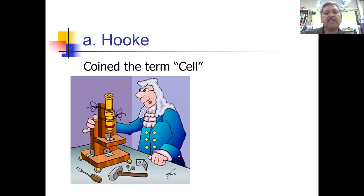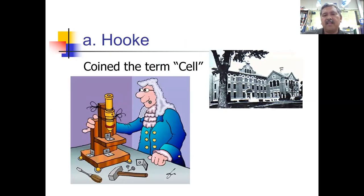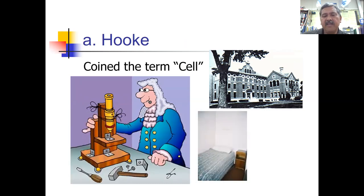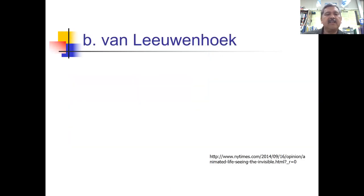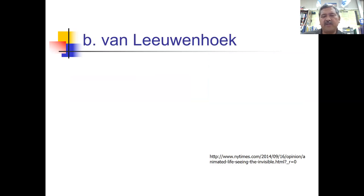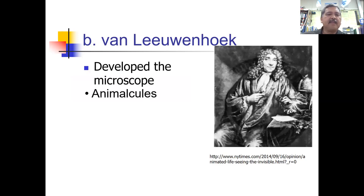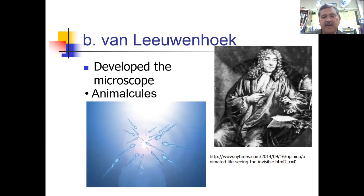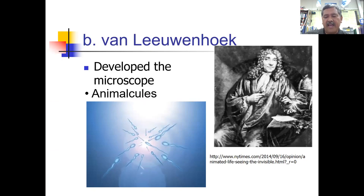First, Robert Hooke gets credit for coining the term 'cell' — he thought cells looked like the little rooms where monks live in a monastery. Next, Dutch lens maker van Leeuwenhoek developed the microscope. He gets credit for what they called animalcules — he thought he could see a little man inside sperm under the microscope, but he was able to demonstrate that he could see very small things with the microscope he developed while working as a lens maker.